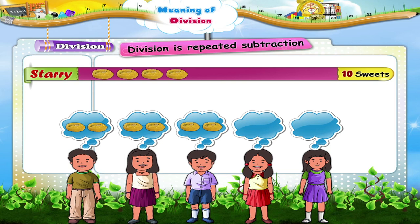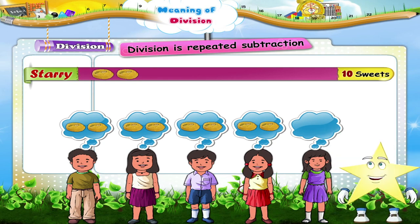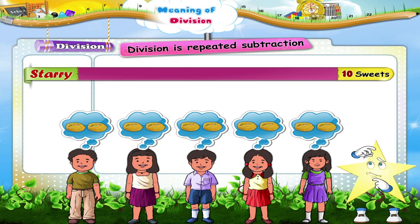From the remaining four, we take away a group of two sweets for the fourth friend — we have just two sweets left. And finally Starry, when we remove a group of two for the fifth friend, we have zero sweets remaining.